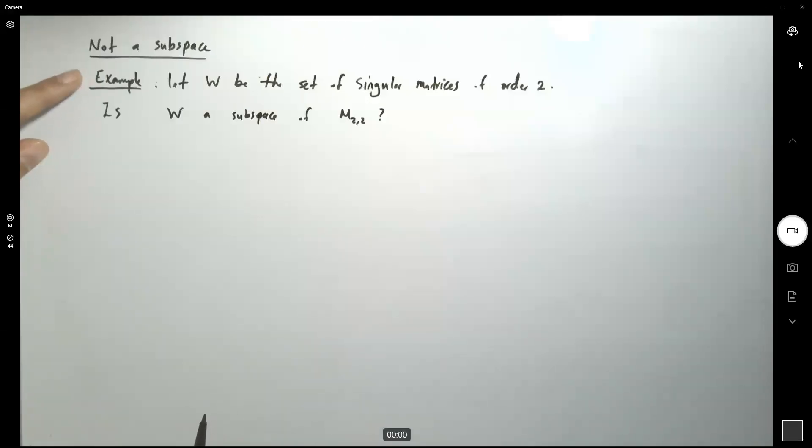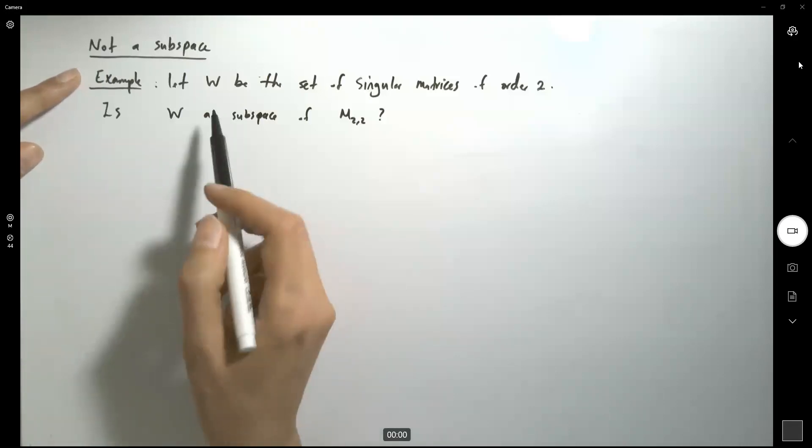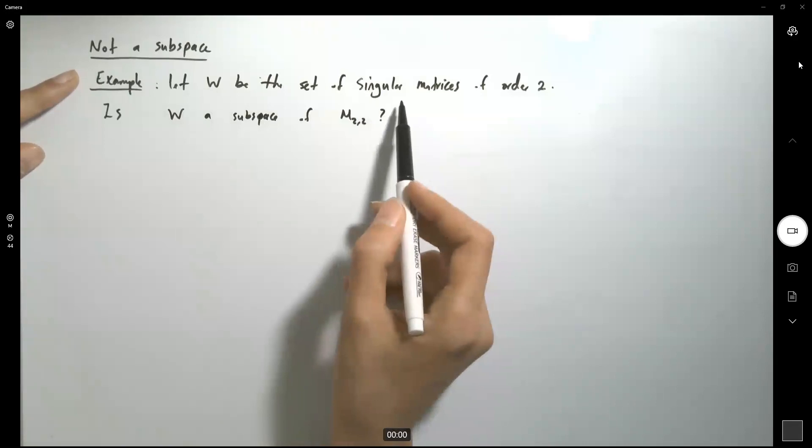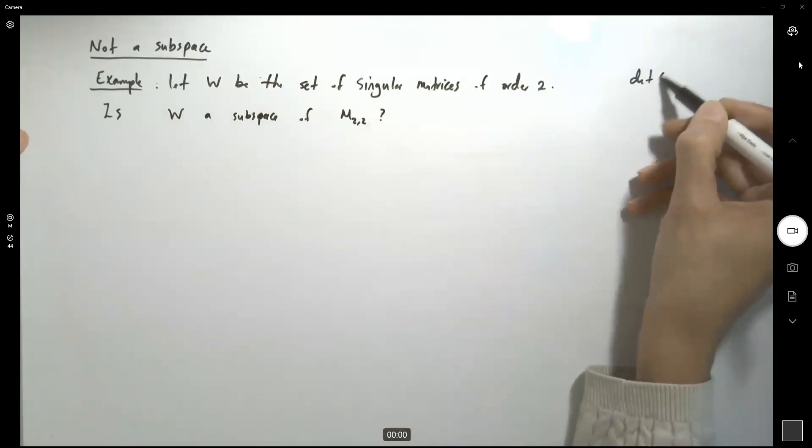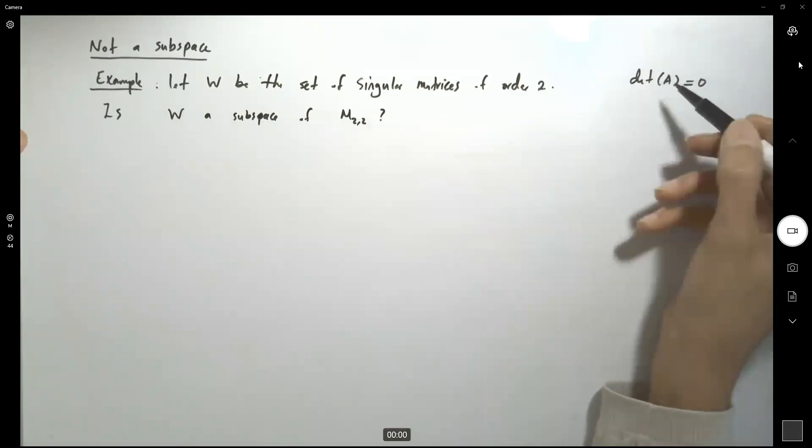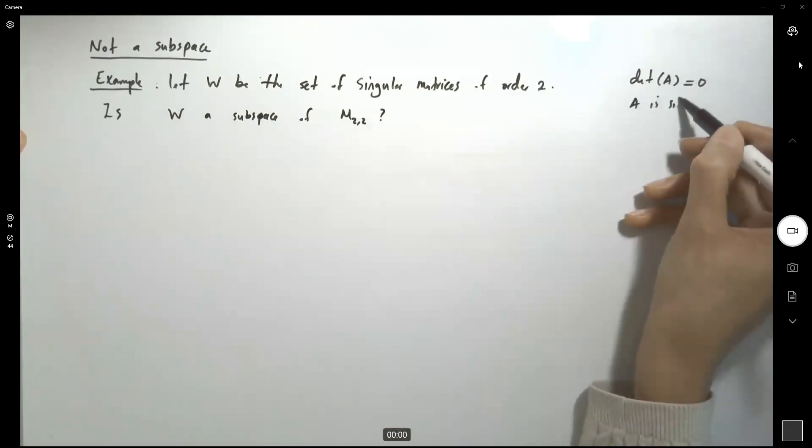An example that shows that not every set is a subspace. For example, consider the set of all singular matrices. Singular matrices—the determinant of A is 0, so we say that A is singular.